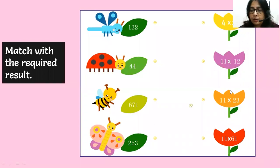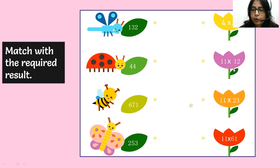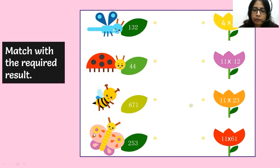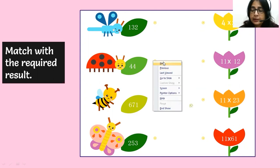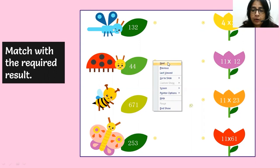Multiplication by 11. Can you match these all things in some seconds? What is the answer: 11 into 23, 11 into 124, 4 into 11? Maybe you can do faster because this is one digit — that means 44. But 11 into 61 in some seconds, I don't think so. So let me teach you. I definitely promise you that after the class, you all will do this in some seconds only — you will not take one minute.